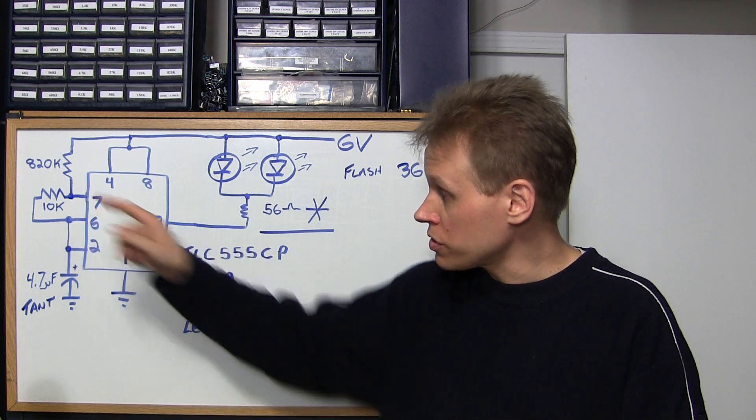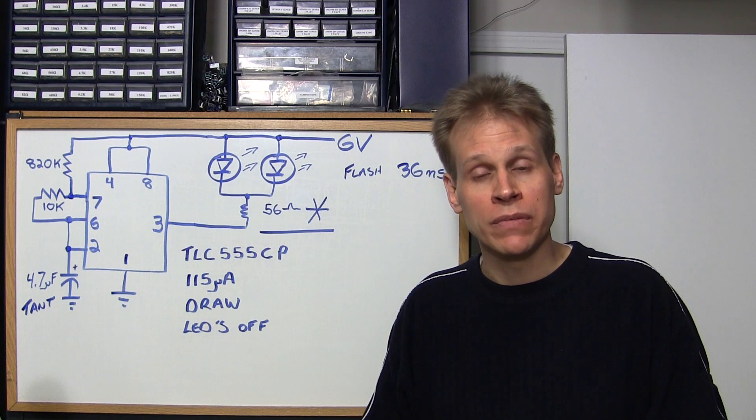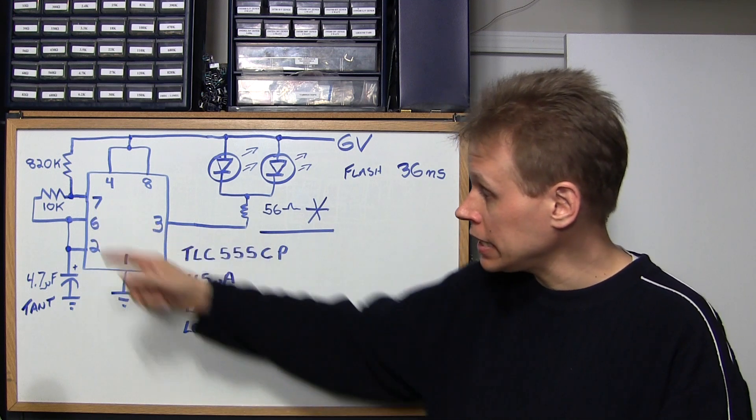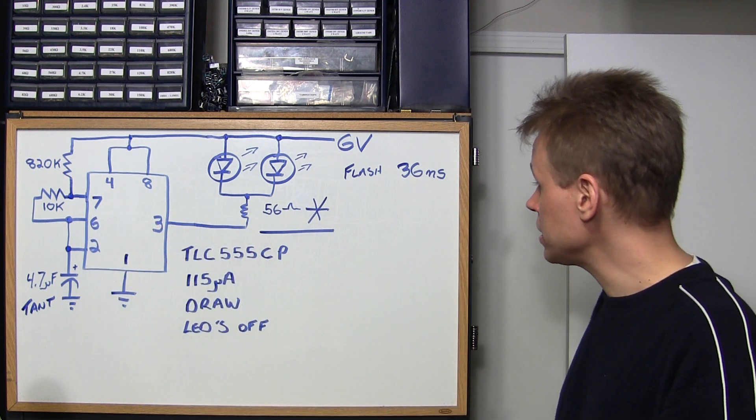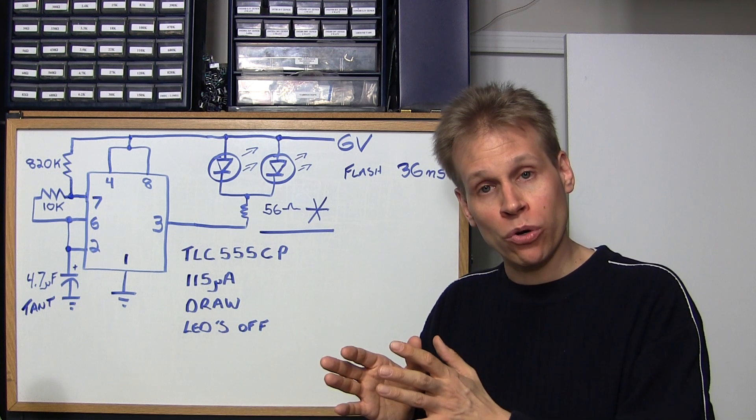The 10k resistor sets that actual duration of how long the LED is on for. So that sets the actual length of the flash. And right now with 10k it works out to be about 36 milliseconds. So that seems to be just about right to mimic a strobe.